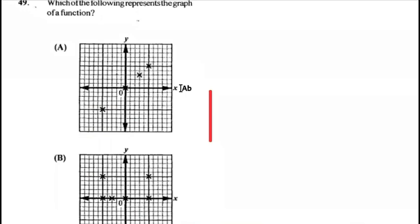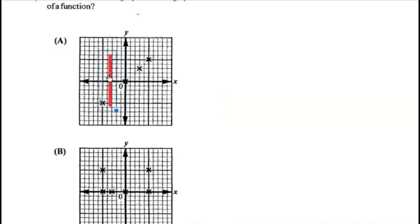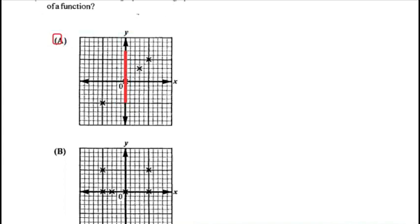Question 49: which of the following best represents the graph of a function? We use the vertical line test — when you run a vertical line through the graph it should only cut each point once. Anywhere you move the vertical line on graph A, it passes through only one point at a time, so A is our answer.